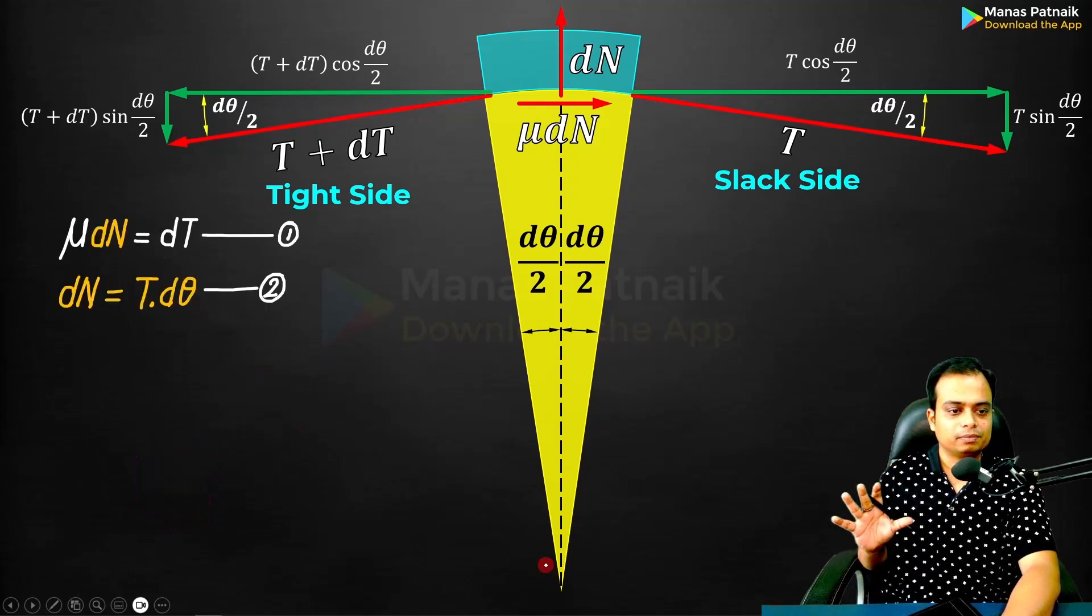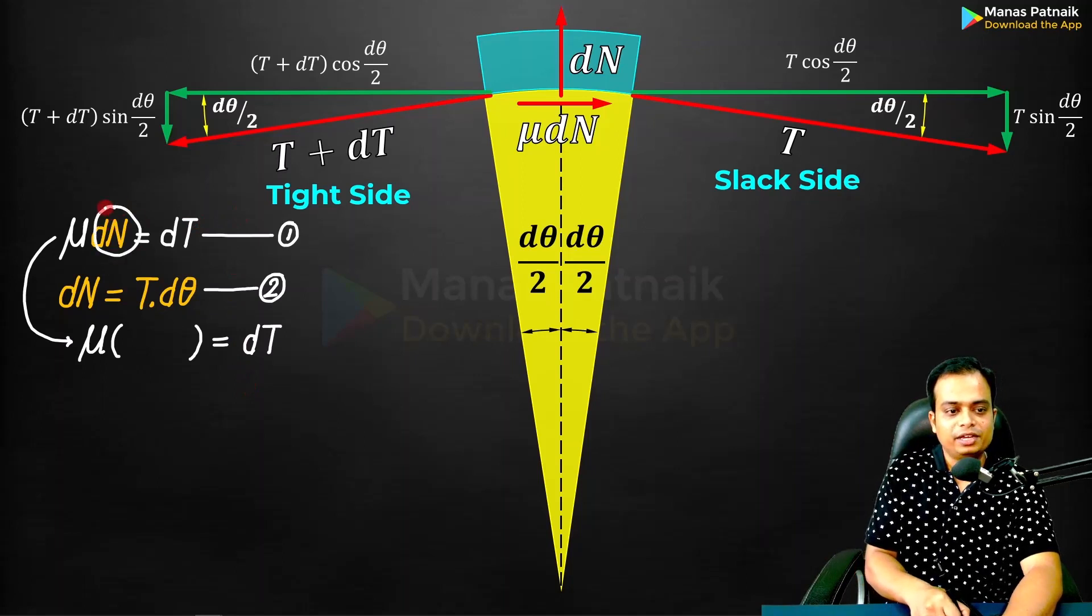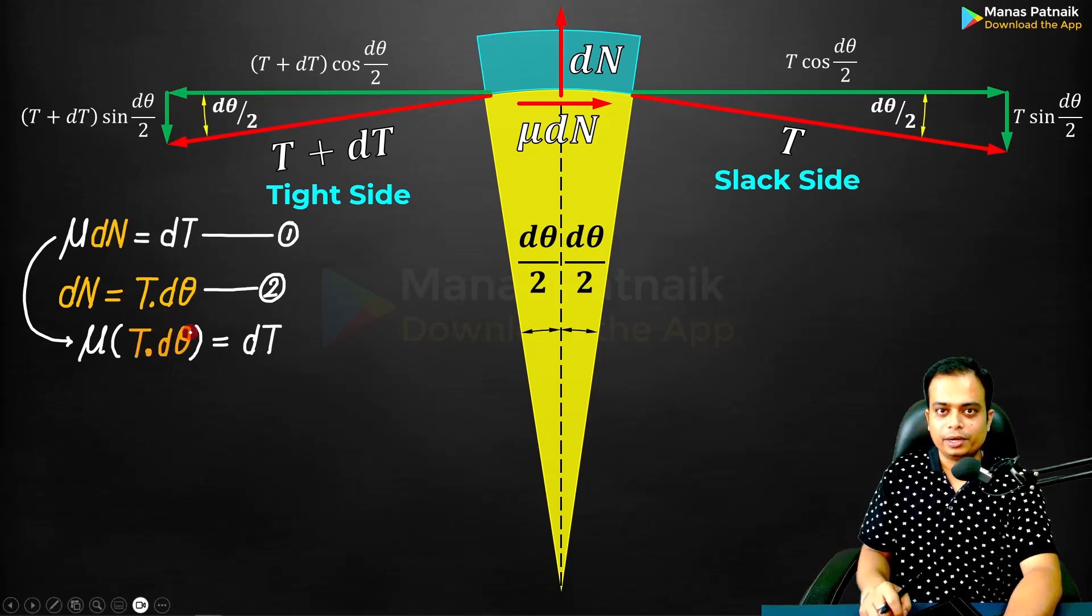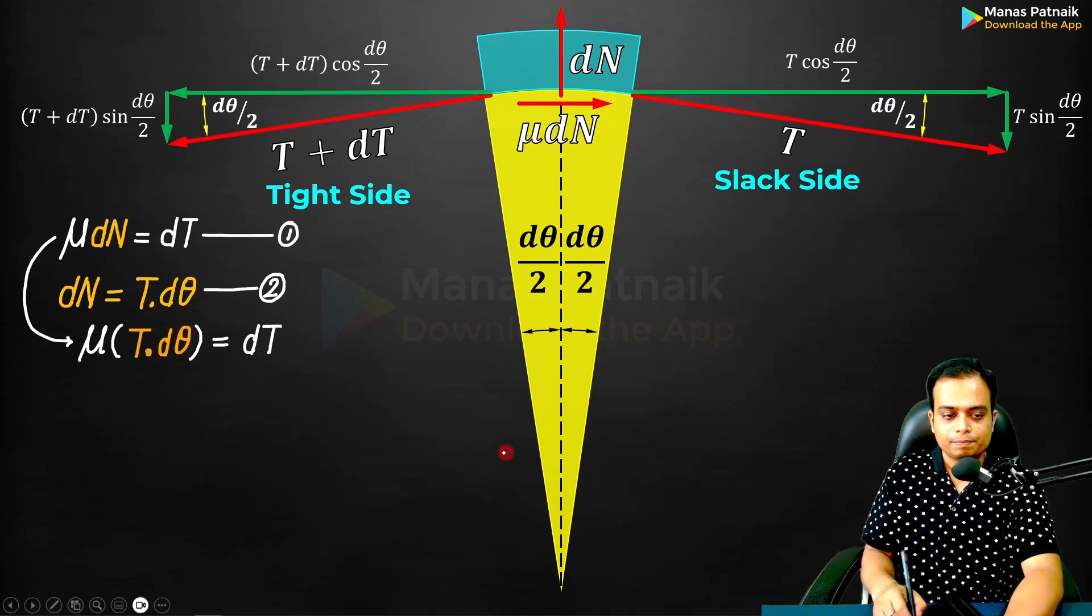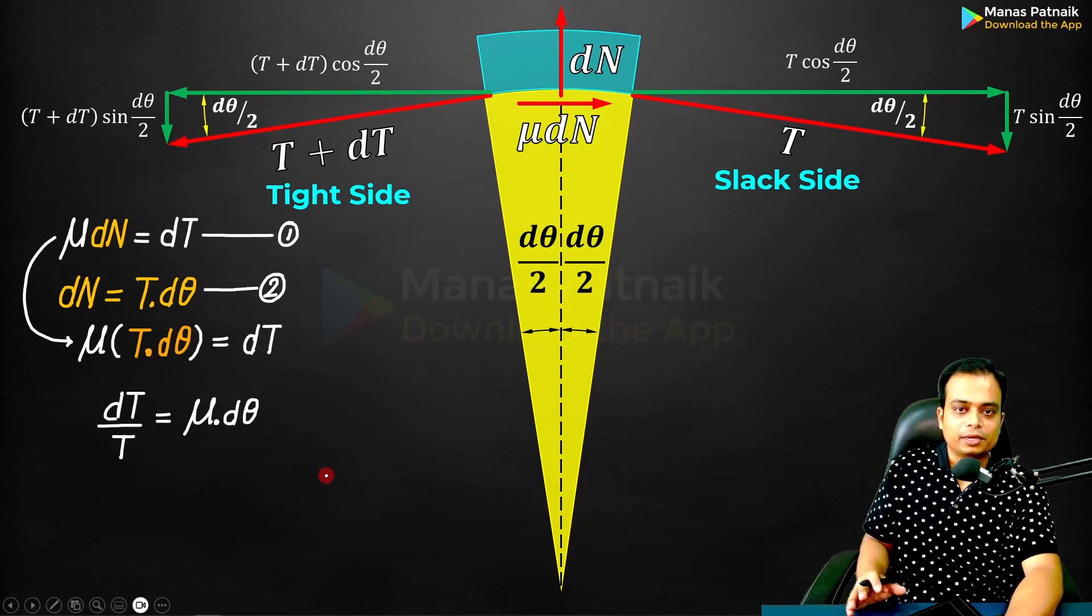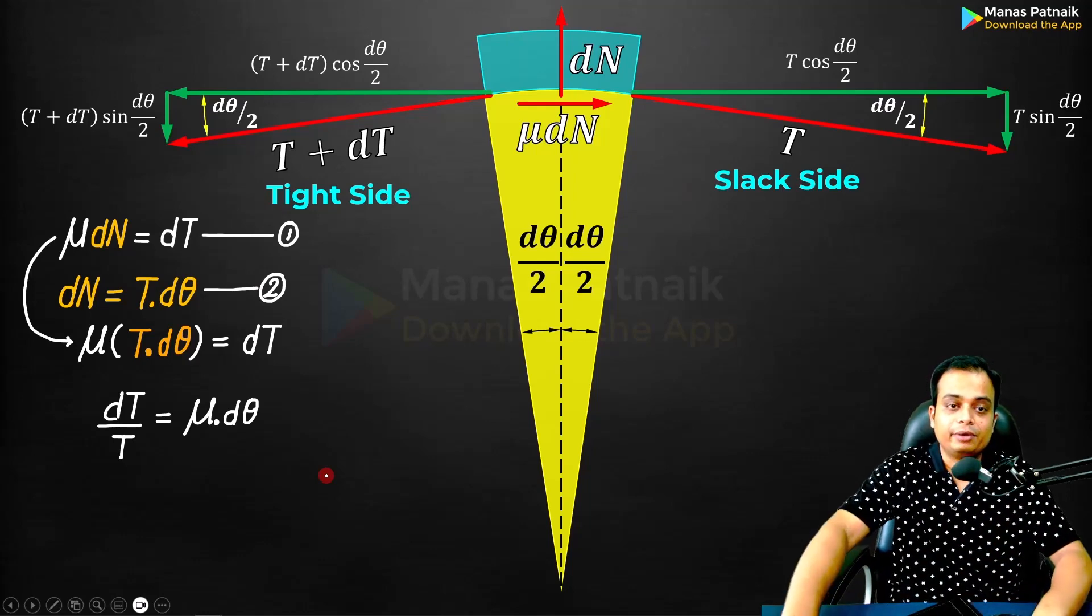Let me write down both equations. Let me start with equation number one. You have to plug in the value of dN, which is T dθ. We put it over here. The moment I do that, this is what you get. Let me simplify. Let me take T over to the right-hand side, so dT/T = μ dθ.